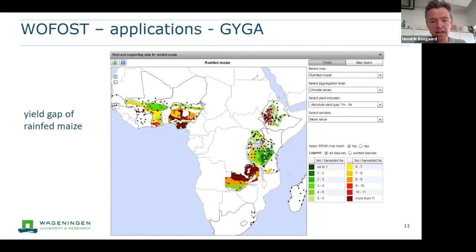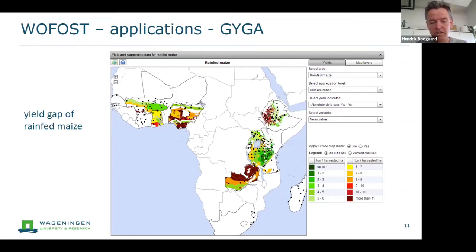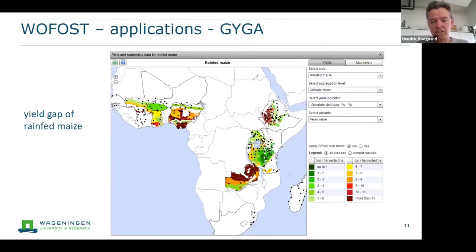This is a result of the GYGA initiative: a yield gap map for rainfed maize in sub-Saharan Africa. Green colors show very small yield gaps while red and dark red colors show large yield gaps. For instance, in Western Ethiopia, you can see areas where production could be increased substantially — but that requires investment in supporting farmers in getting more nutrients into the area.